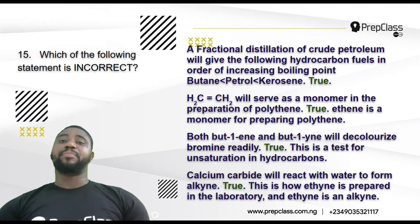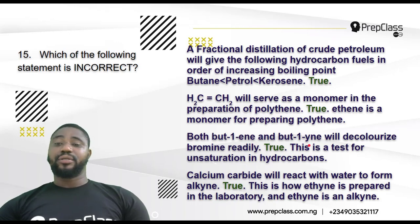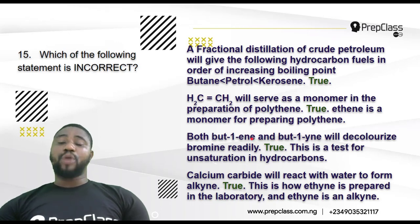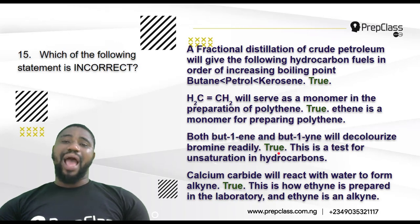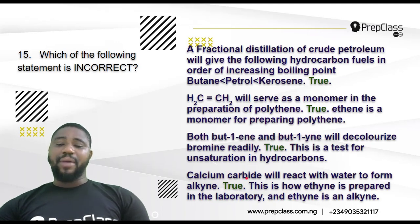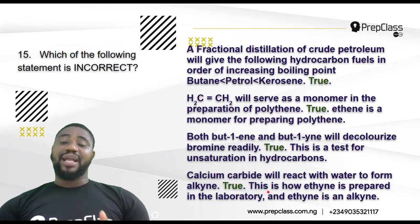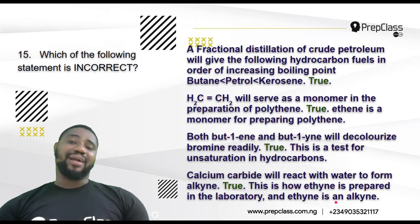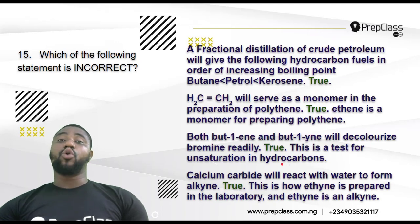Examples of unsaturated hydrocarbons include alkenes and alkynes such as ethene, propene, but-1-ene, but-2-ene, ethyne, and propyne — all of which can decolorize bromine water. Option D — calcium carbide reacts with water to form ethyne. That is true. This is how ethyne (an alkyne) is prepared in the laboratory: calcium carbide reacts with cold water to produce ethyne. So options A, B, C, and D are all correct.